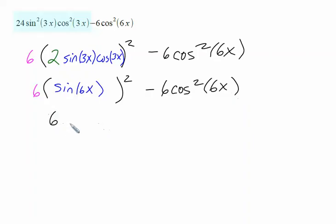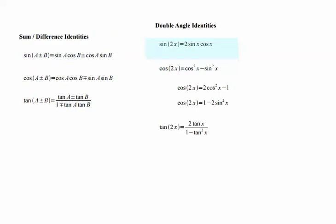Notice, then, we have 6 sine squared of 6x minus 6 cosine squared of 6x. But, now, we're going to look back at our identities, and this particular problem is going to have us implement two identities.